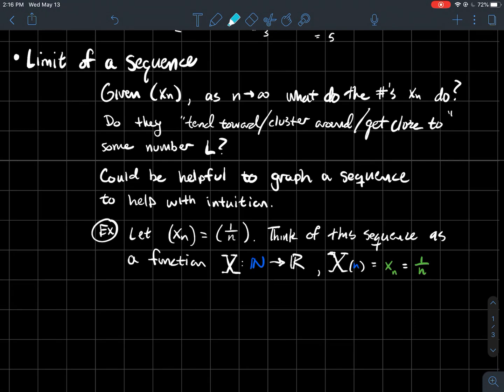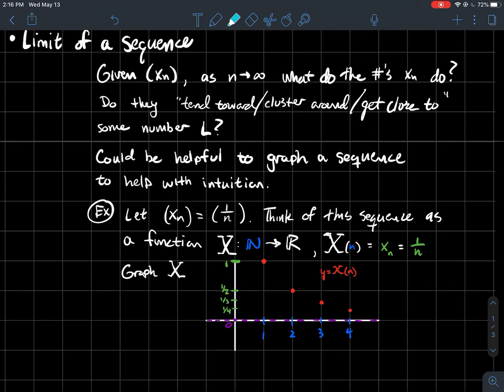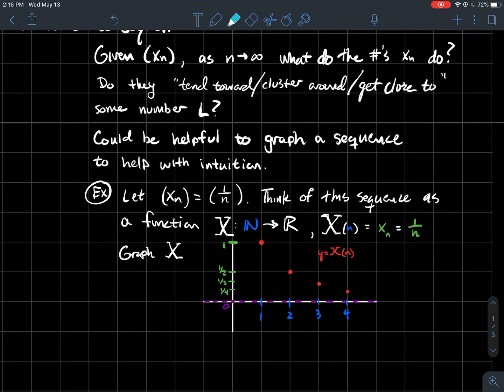So X of one is just the first term in your sequence, which would be one. X of two would be the second term, one half, and so on. So you can think of these sequences always as a function from the natural numbers to the reals. And the only reason I'm saying that might be helpful is because I can graph this function X.